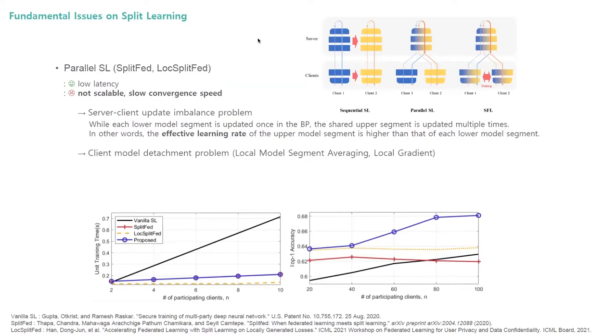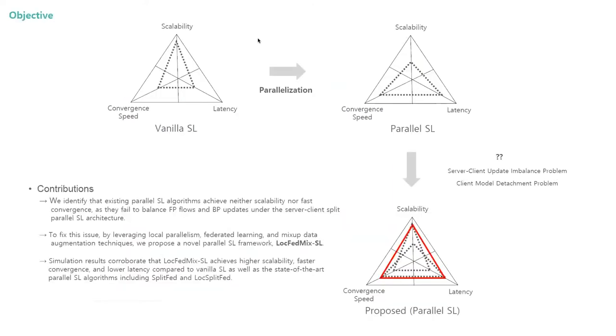Several works find that a higher learning rate often requires more training samples, yet the upper-model segment in parallel SL has no access to client's data. Alternatively, the lower-model segment averaging in SplitFed and local gradients in LocSplitFed partly solve the imbalance by additionally training the lower-model segments, which may however encounter another issue named client model detachment problem. The aforementioned two methods separately update the lower-model segments, which may bring about detaching them from upper-model segment. Indeed, layer-wise model parameter averaging does not guarantee high accuracy without sophisticated techniques. And likewise, local gradients make the lower-model segments forget about the existence of upper-model segment, failing to utilize the full capacity of DNN.